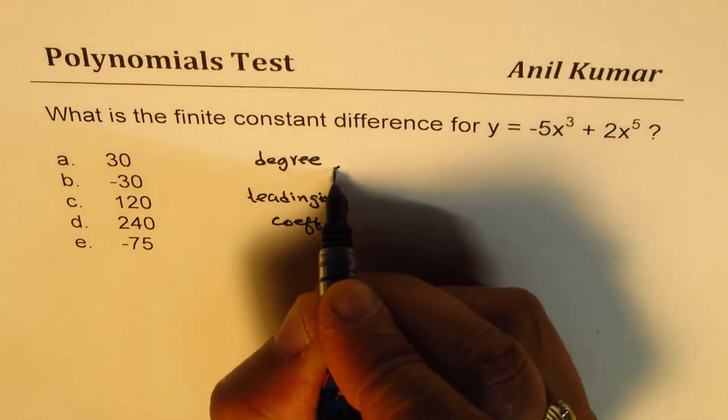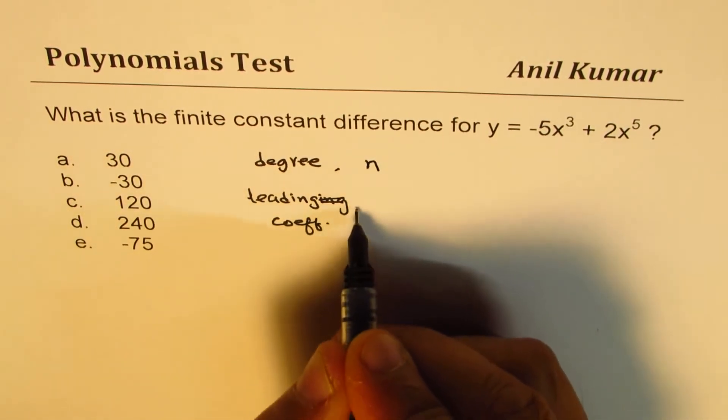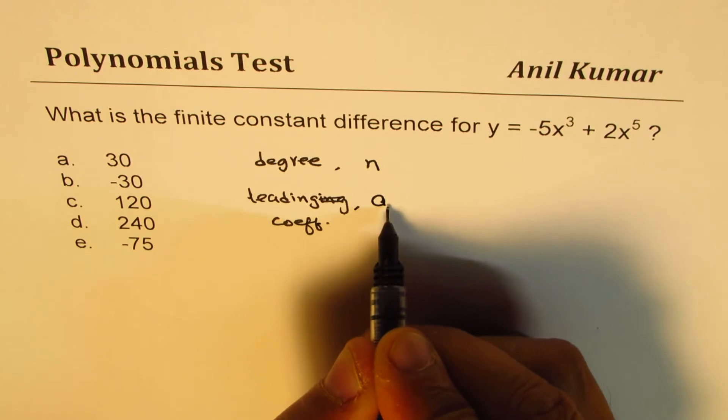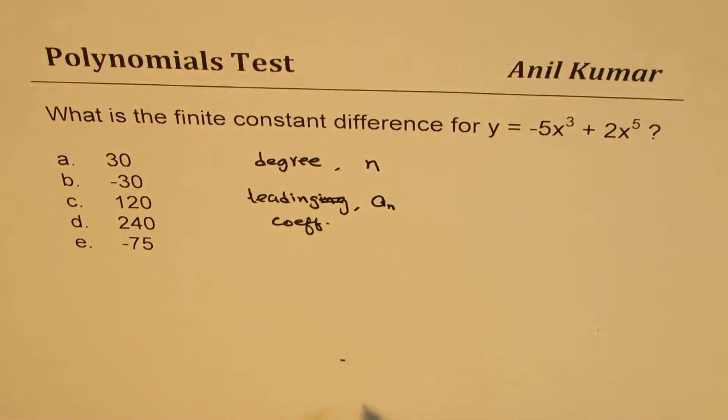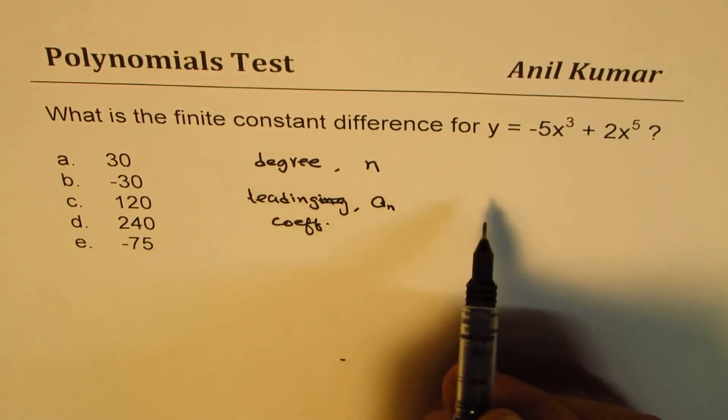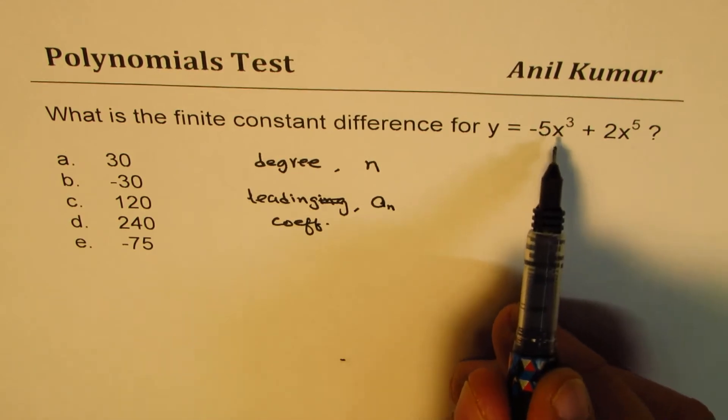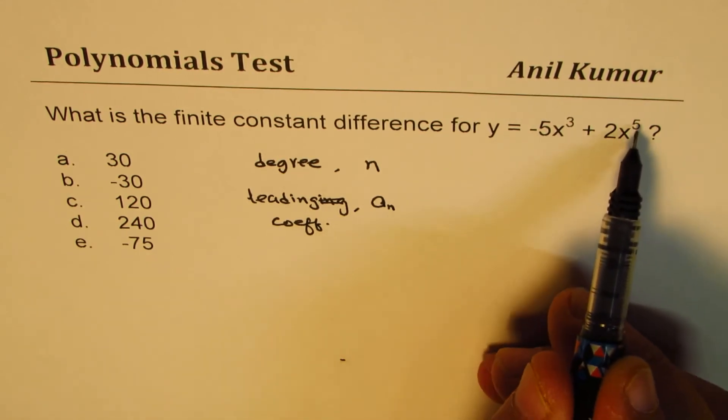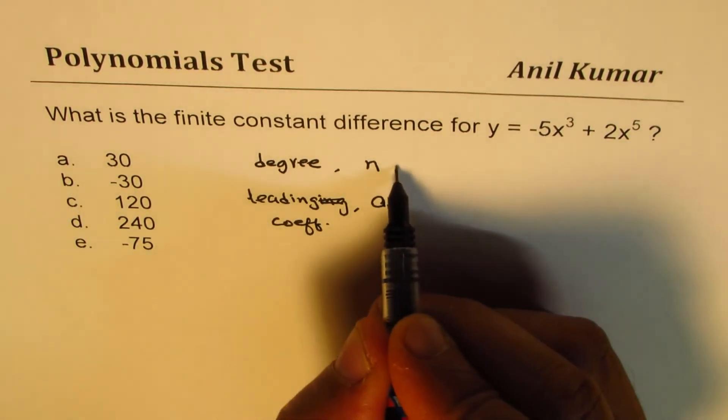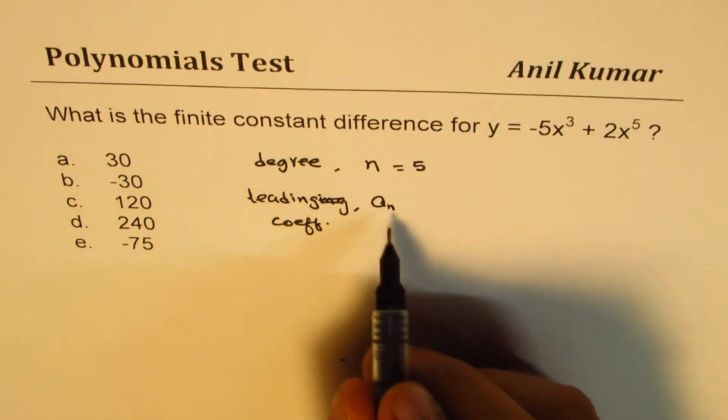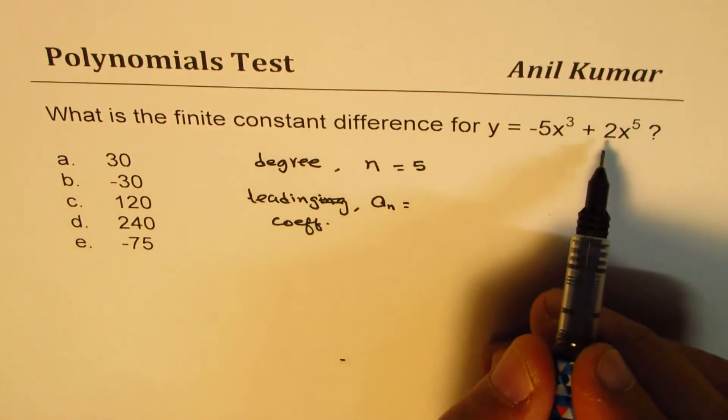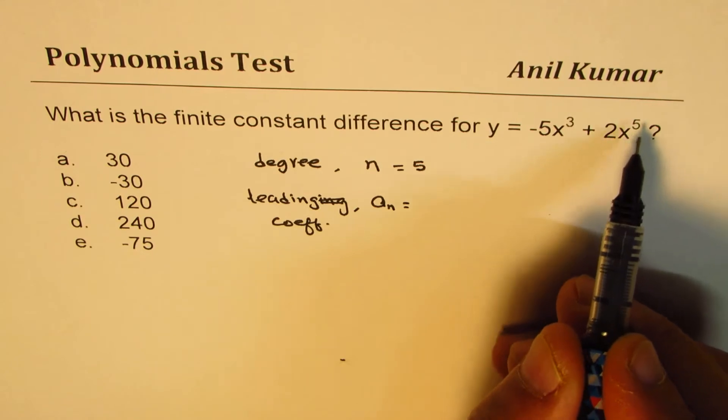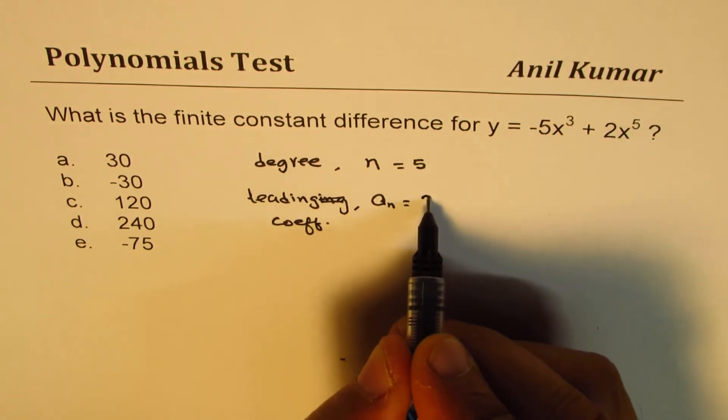Let us say degree of the polynomial is n and leading coefficient is a, we'll say a_n. So for the given polynomial, what is the degree? Check each term, highest power is 5, so n equals 5. Leading coefficient is the coefficient with the term with highest degree, so in this case leading coefficient is 2.